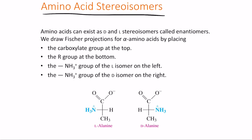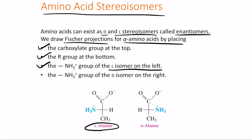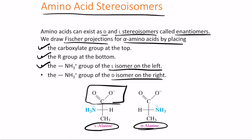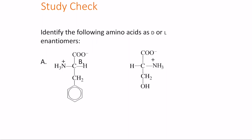Like sugars, amino acids also exist as stereoisomers — enantiomers called D and L forms. To draw Fischer projections for alpha amino acids: place the carboxylate group on top and the R group at the bottom. If the NH3+ group is on the left side, it is the L isomer; if it is on the right side, it is the D isomer.